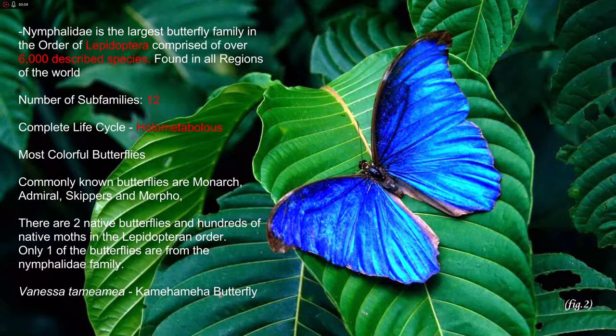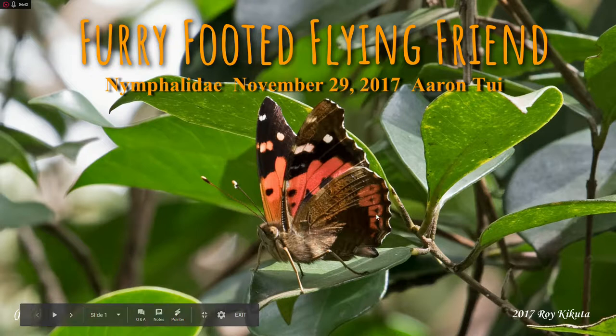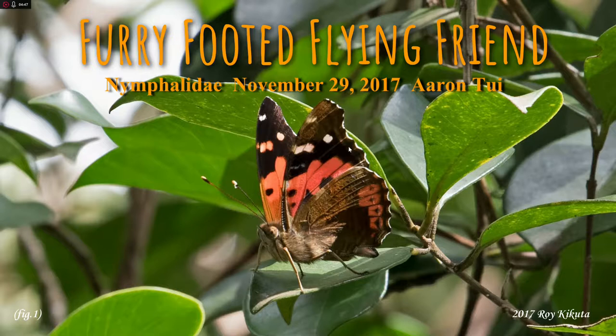This family of butterflies is known to have the most colorful butterflies. Some commonly known ones are the monarch butterflies, admirals, skippers, and the morpho blues. Now there are two native butterflies and hundreds of native moths in the Lepidopteran order found here in Hawaii. However, there's only one native butterfly within this family, and that is the Kamehameha butterfly, also known as Vanessa tamehameha.